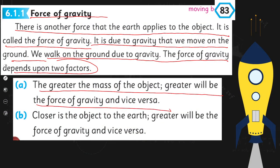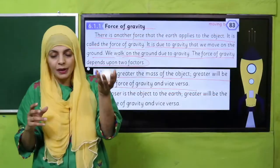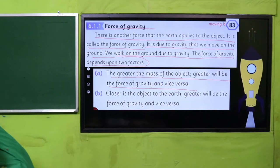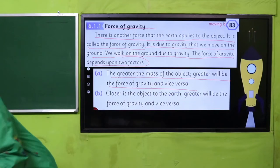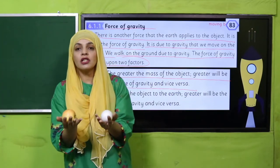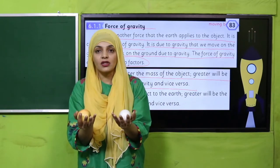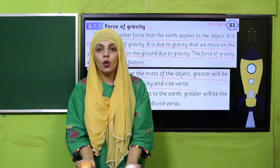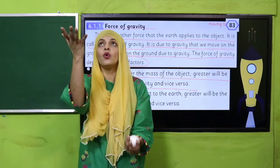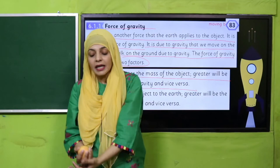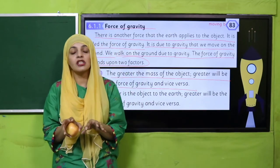The greater the mass of the object, the greater will be the force of gravity, and vice versa. Jitni zyada cheez bhaari hogi, utni hi zyada gravity uske upar act karegi. For example, I have a lighter ball here and I have an apple here. Gravity jo hai wo apple ko apni taraf jaldi kheenchegi. If I throw both at the same time, the apple will come back more quickly.